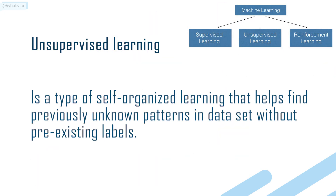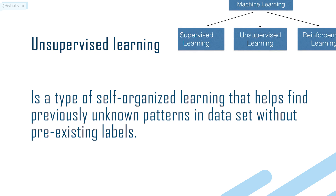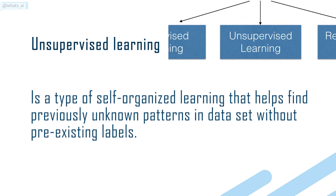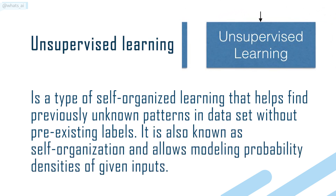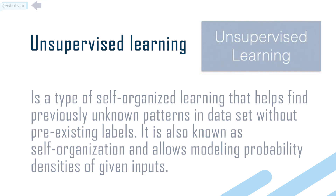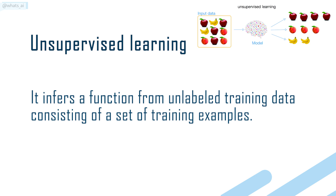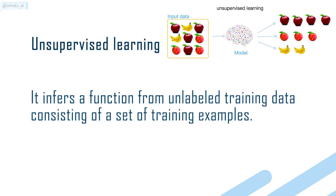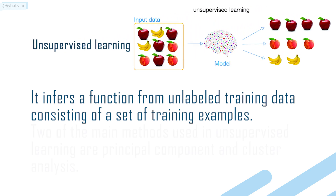Unsupervised learning is a type of self-organized learning that helps find previously unknown patterns in a data set without pre-existing labels. It is also known as self-organization and allows modeling probability densities of given inputs. It infers a function from unlabeled training data consisting of a set of training examples.